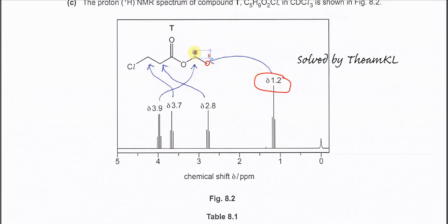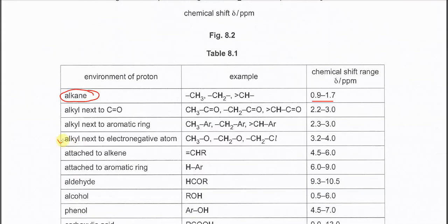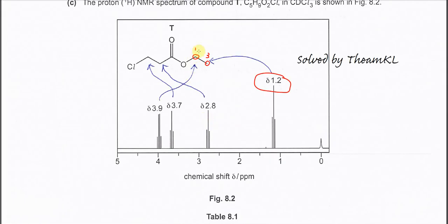How about the CH2 next to the oxygen? We consider this CH2 as the reference, and the adjacent carbon has three protons. So it's 1+3, giving a quartet. This quartet must be around 4 ppm because this CH2 is next to an electronegative atom. From the table, alkyl next to an electronegative atom has a chemical shift around 3 to 4 ppm. So this CH2 gives a quartet signal.